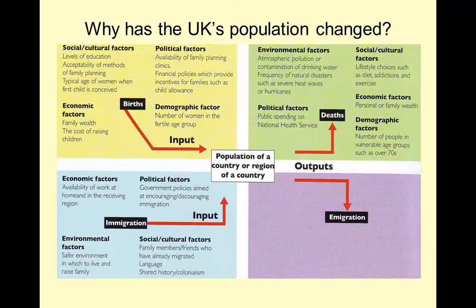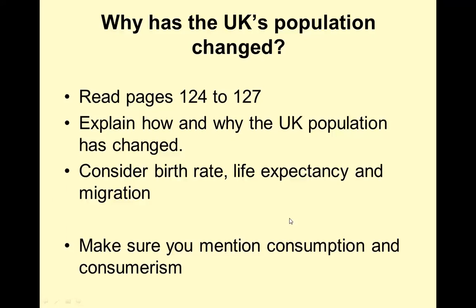This table presents the key ideas: we get changes to birth rates, changes to death rates, changes to immigration and emigration - though largely we have more people immigrating than emigrating. For your reading task, you're going to need to read pages 124 to 127. I want you to explain the pattern of population change, considering the birth rate, life expectancy, and migration. I also really want you to focus on and consider the issues in terms of consumption and consumerism.